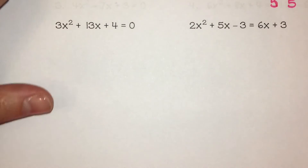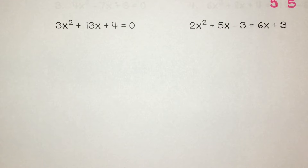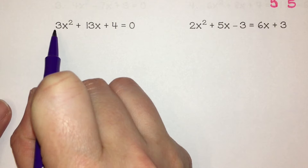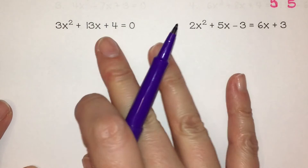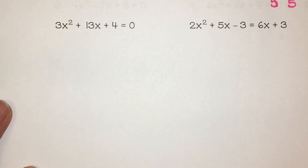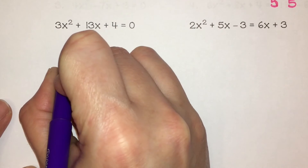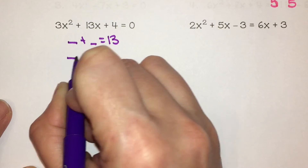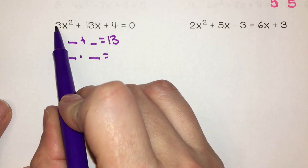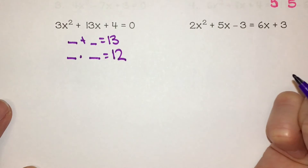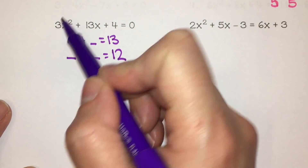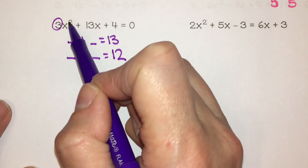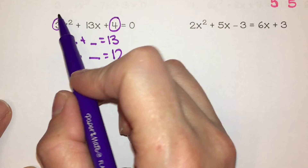Let's try one that's a little more complex: 3x squared plus 13x plus 4 equals 0. Because I have that number multiplied by x squared and I can't factor anything out — I can't divide 3, 13, and 4 by the same thing — I need to figure out what I add together to equal this middle term of 13, and what I multiply together to equal 3 times 4, which is 12. Don't forget, you have to multiply the coefficient of x squared times your constant. So 3 times 4 is 12. I know that my numbers will be 12 and 1: 12 plus 1 is 13, and 12 times 1 is 12.